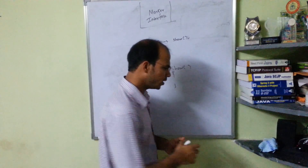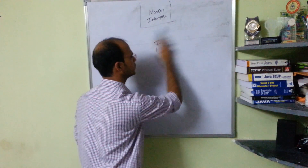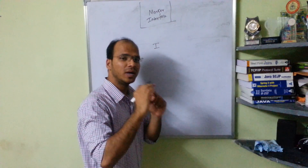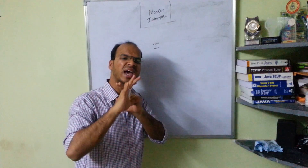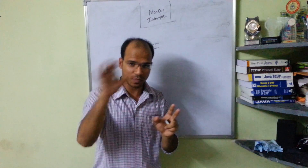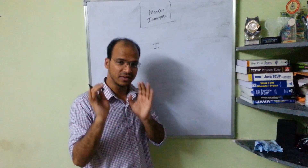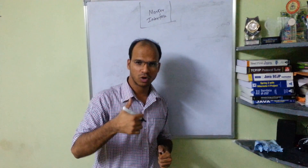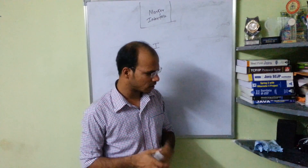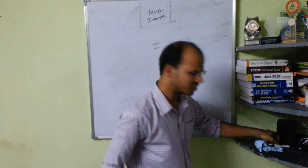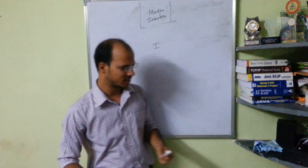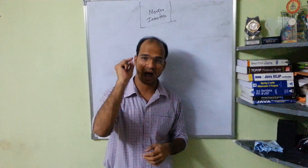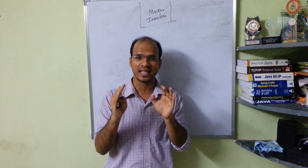Now let's suppose I have an interface, but in this interface we don't have any method — no method, zero methods. That interface is called a marker interface. So a marker interface is an interface without any declaration — it's blank.